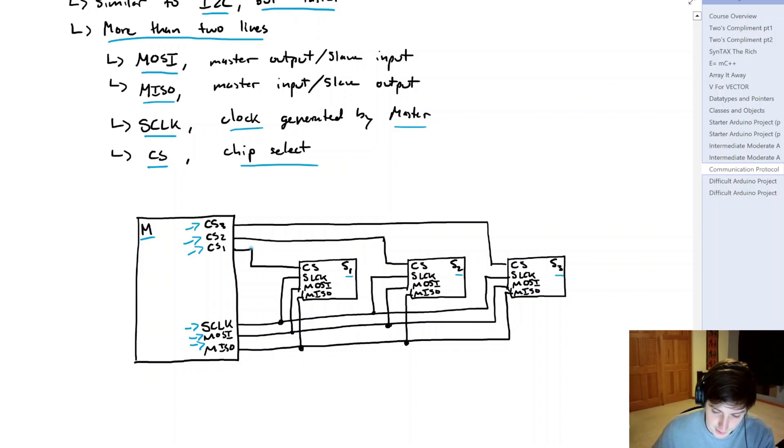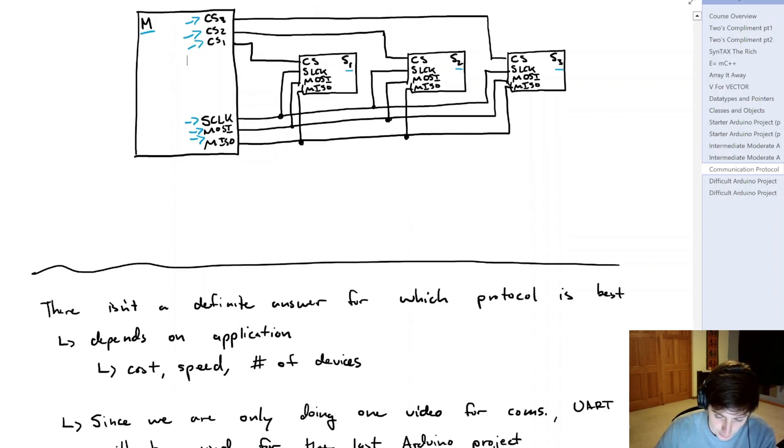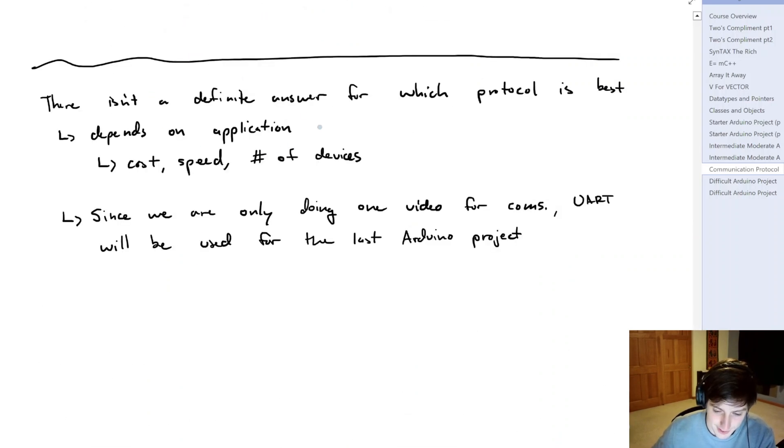And we're not going to dive fully into this one. It would be better to really learn everything about I2C, and then jump into SPI. But for what we need to understand for this course, it's really that there are standardized communication protocols that we can use to send data. And maybe you're asking which one is best. And there really isn't an answer for that. With many things in engineering, it depends on the application.